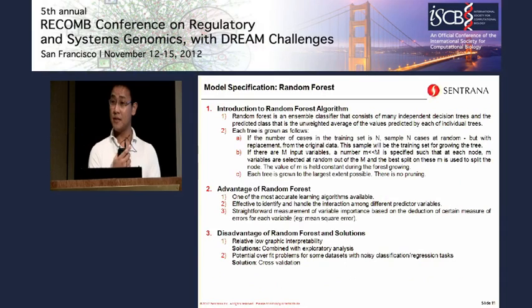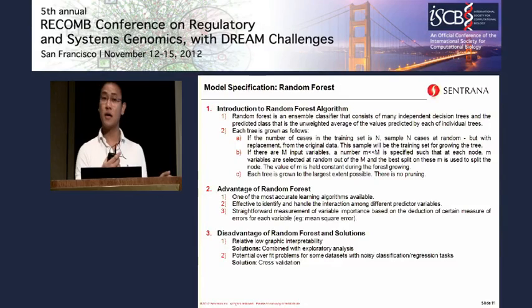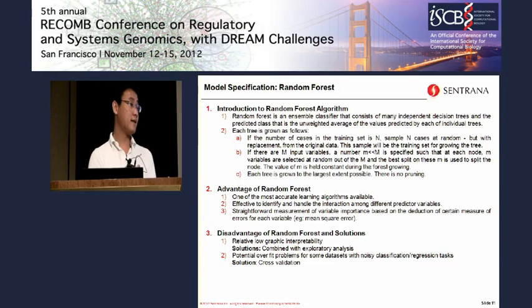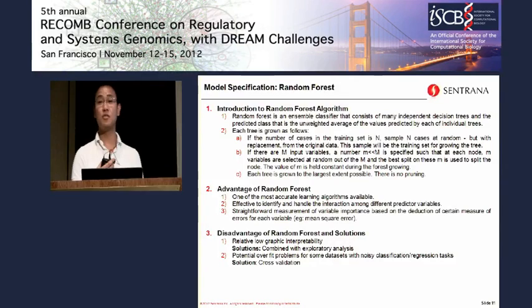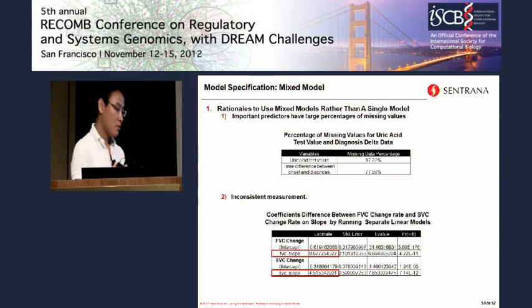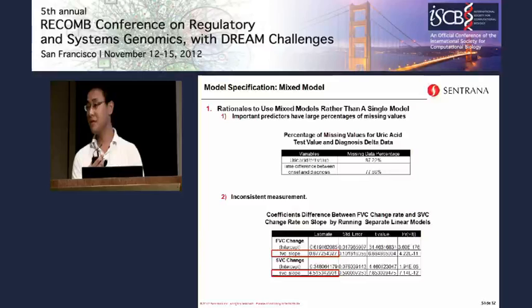We propose using a random forest algorithm. Random forest is an ensemble classifier that generates many independent regression trees from subsets of the data and then aggregates the results as the model output. However, we felt it was probably not a good idea to throw all our data into just one model, because of the specific data characteristics. For example, the urate asset value and the time difference between onset and diagnosis each have as much as about 80% of data missing.